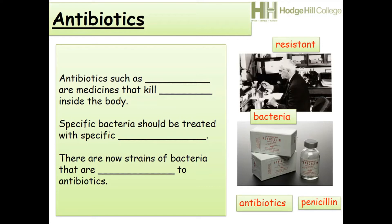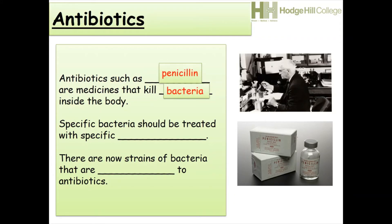Antibiotics, such as penicillin, are medicines that kill bacteria inside the body. Specific bacteria should be treated with specific antibiotics. You can only use certain antibiotics to kill certain bacteria — antibiotics won't kill every type. There are now strains of bacteria that are resistant to antibiotics, meaning those antibiotics do not affect them, such as MRSA.